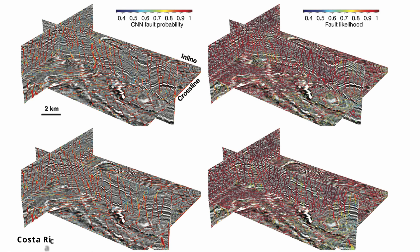The second seismic data set is extracted from a larger volume across the Costa Rica margin. Fault detection is more challenging here because the faults are very close to each other and the image is pretty noisy. The network probabilities at different scales show most faults clearly labeled and continuously trackable. Fault likelihood at the same slice can detect some faults, but the features are noisier and it mislabels faults especially in areas where seismic features are noisy.